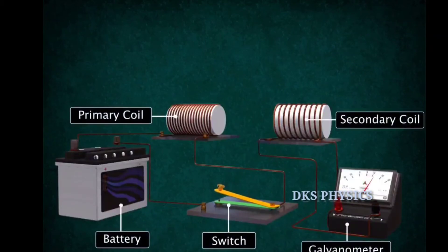When we switch on the primary coil, we can observe a deflection in the galvanometer connected to the secondary coil. This shows a current is induced in the secondary coil.